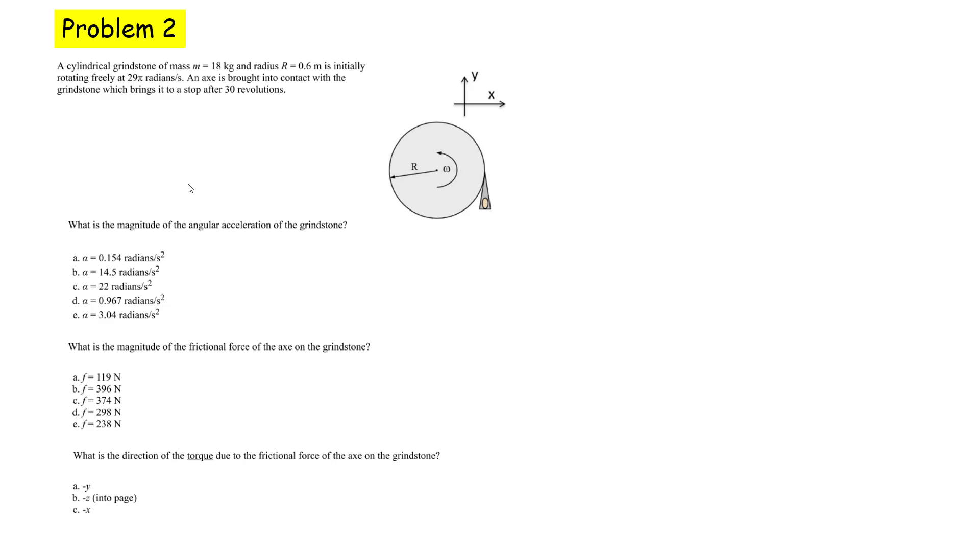Here's problem two. We have a cylindrical grindstone here of mass 18 kilograms, and the radius is 0.6 meters. It's initially rotating at some angular velocity, which is given by 29π radians per second. And here we have an axe that's brought into contact with the grindstone, which brings it to a stop after 30 revolutions. We have a few questions here related to this system.